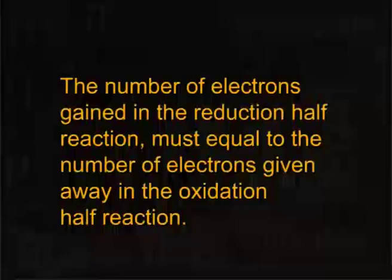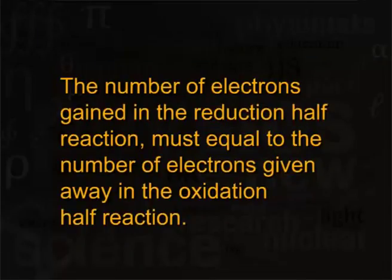The overall electrochemical cell reaction can be understood as a two-step reaction, which we call two half reactions. One equation is written for the reduction reaction, in which electrons are gained, and the second equation is written for the oxidation reaction, in which electrons are given away. The number of electrons gained in the reduction half reaction must equal the number of electrons lost in the oxidation half reaction.